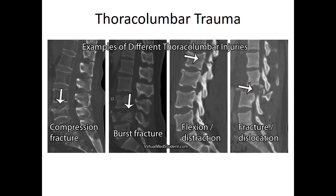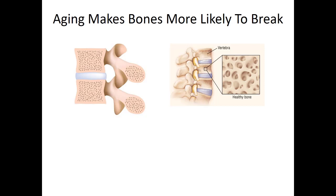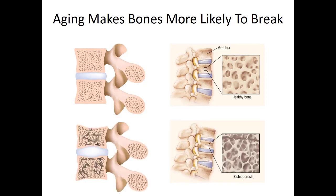There are many types of thoracolumbar trauma — you don't need to know them all. The important thing to understand is that as people age, their bones get more prone to fracturing. In a young, healthy bone, trabeculi — small porous areas inside the bone matrix — provide some cushioning and allow cellular activity. But with age, these little holes increase in number and size, basically breaking up the integrity of the bony skeleton.